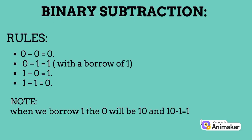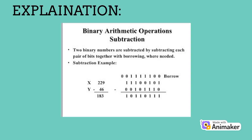Binary subtraction rules: 0 minus 0 equals 0; 0 minus 1 equals 1 with a borrow of 1; 1 minus 0 equals 1; 1 minus 1 equals 0. Note that when we borrow 1, the 0 becomes 10 and 10 minus 1 equals 1. Binary arithmetic subtraction: two binary numbers are subtracted by subtracting each pair of bits together with borrowing where needed. Here is an example showing subtraction.